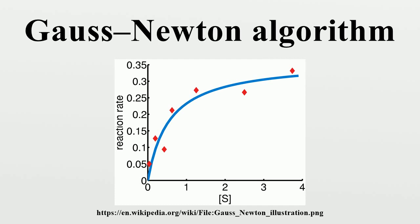where D is a positive diagonal matrix. Note that when D is the identity matrix I, then, therefore the direction of delta approaches the direction of the negative gradient.